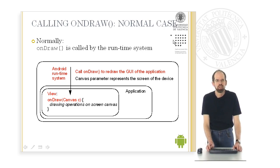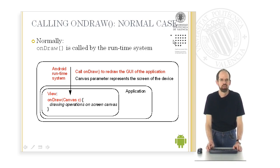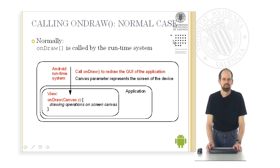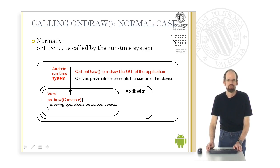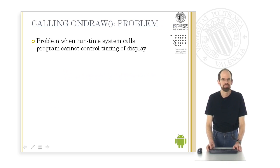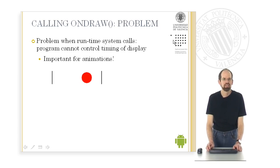Normally onDraw is called by the runtime system. We have the view object with its onDraw method, embedded in the application. The Android runtime system calls the onDraw method to redraw the graphical user interface of the application. The canvas parameter represents the screen of the device. The problem when the runtime system calls onDraw is that the program itself cannot control the timing of the display.